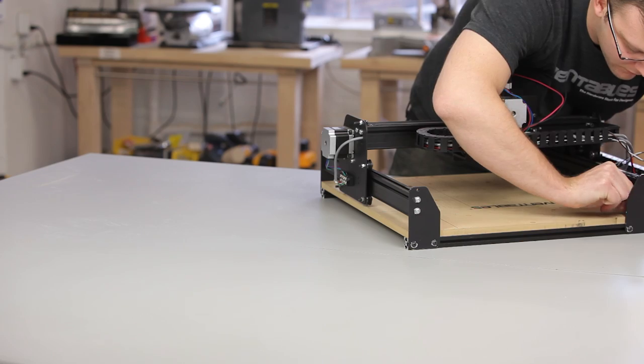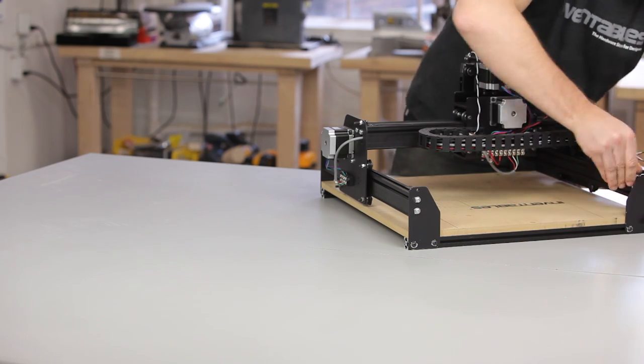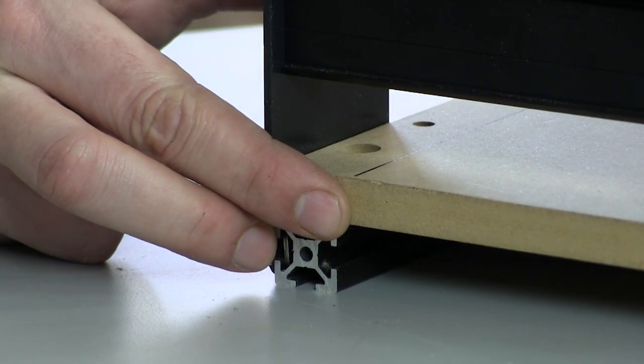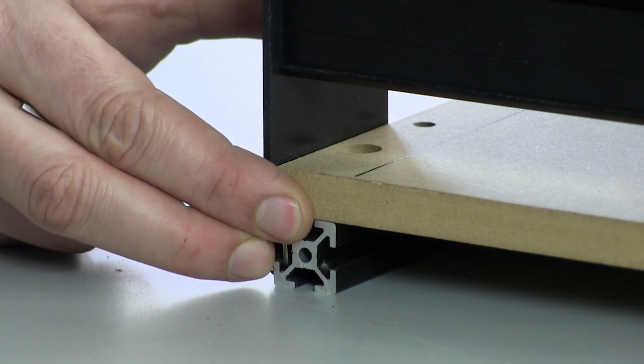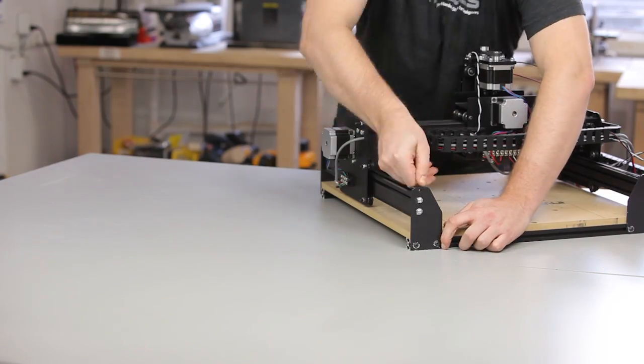Get all the screws finger tight and then line the waste board up with the extrusion. When you feel like it's square, tighten all the screws down.